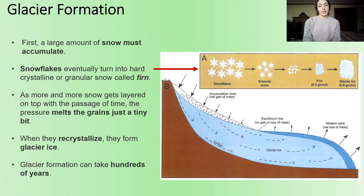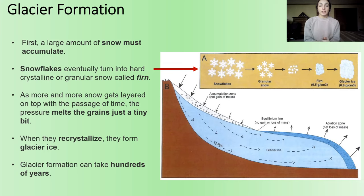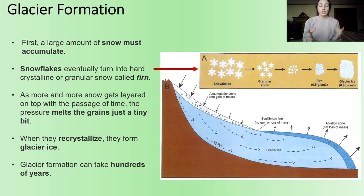First, a large amount of snow must accumulate. Those snowflakes that come down are very soft and not very compact. So once they start to accumulate, they start to get compacted and turn into a more compressed, denser type of crystalline material called firn.